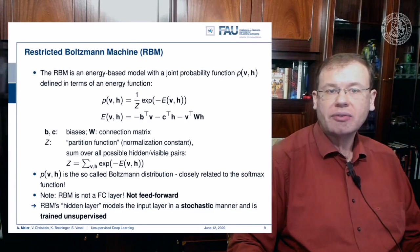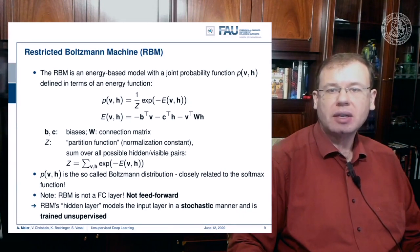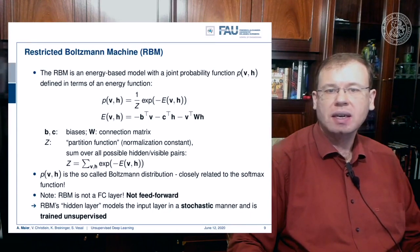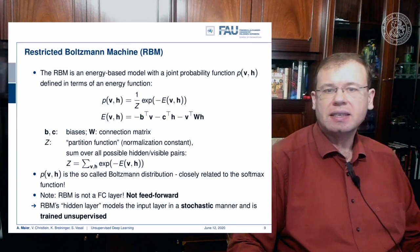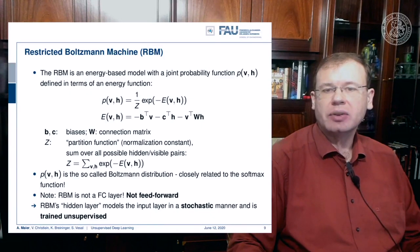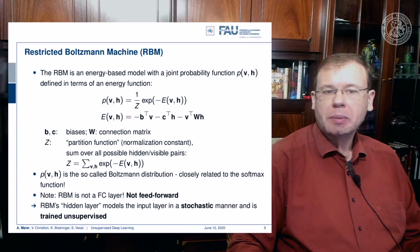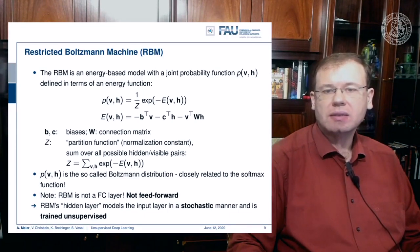The visible units V represent the observed data and the hidden units capture the dependencies — they are latent variables and are supposed to be binary zeros and ones. The restricted Boltzmann machine is based on an energy-based model with a joint probability function P(V, H) defined in terms of an energy function: (1/Z) times e to the power of minus E(V, H). The energy function E is essentially an inner product of bias B with V, another bias C with H, and a weighted inner product of V and H weighted with matrix W. The unknowns are B, C, and W.